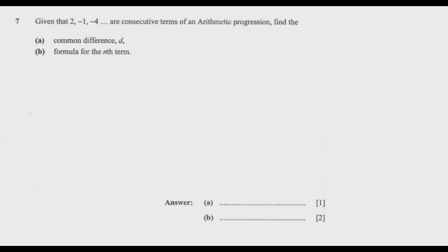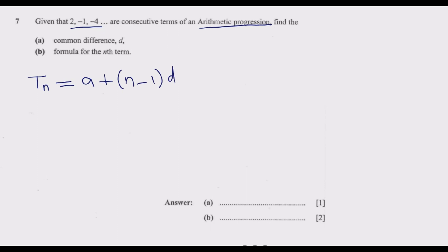So basically, what we are given is that this is an arithmetic progression. We've been given three consecutive terms, and question (a) requires us to find the common difference. An arithmetic progression is given by T_n equals the first term plus (n minus 1) times the common difference d. From this information we can find d. We know the first term a equals 2, and the second term is negative 1.